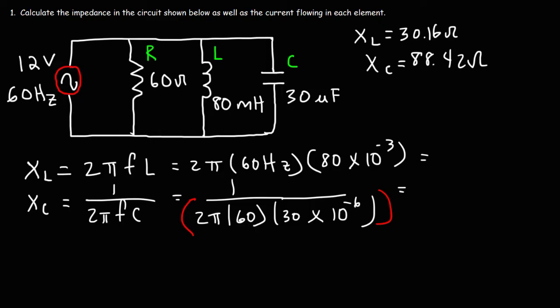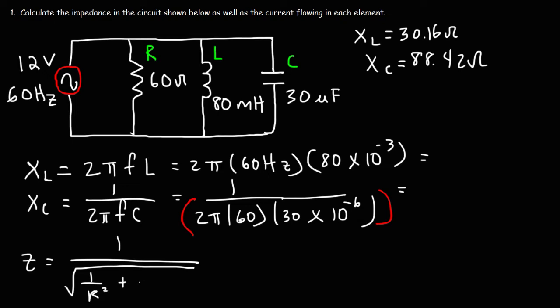Once you have the inductive reactance and the capacitive reactance, you now have enough information to calculate the impedance in the circuit. The formula to calculate the impedance in a parallel RLC circuit is 1 divided by the square root of 1 over R squared plus 1 over XL minus 1 over XC, squared — all inside the square root symbol.